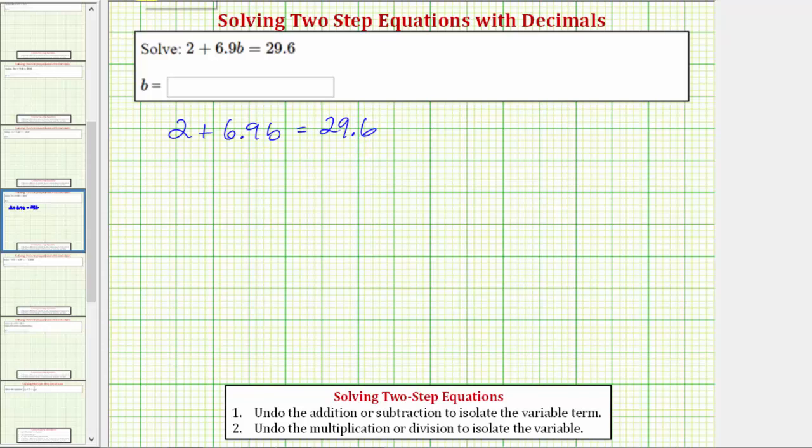In order to solve the equation for b, we need to isolate b on one side of the equation. And because b is on the left side of the equation, our solution will be in the form of b equals some value, again that makes the left side equal to 29.6.